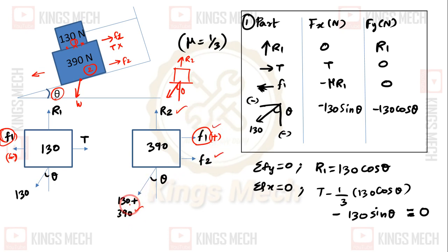In block two, the weight is not only 390N but also the reaction from block one, which is R1. So this is the arrangement - five forces on block two, four forces on block one.